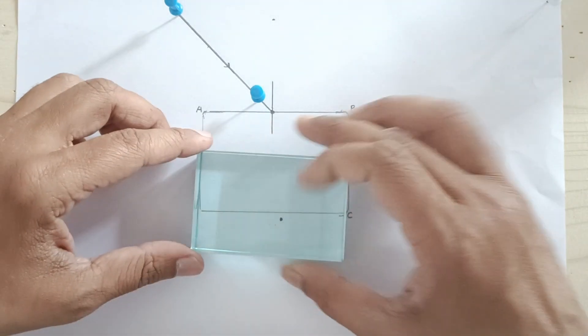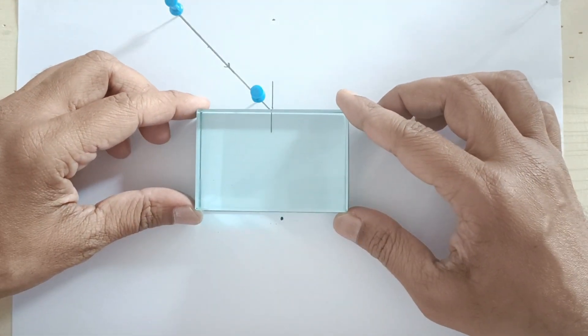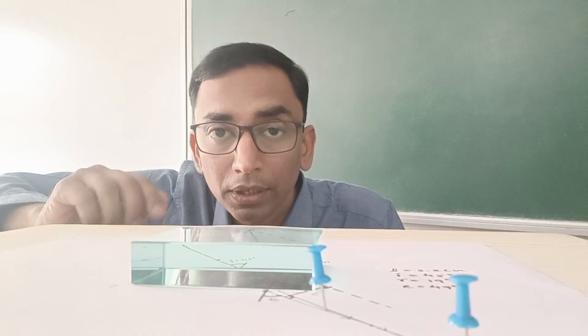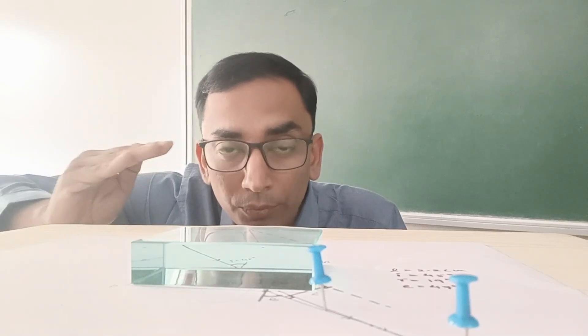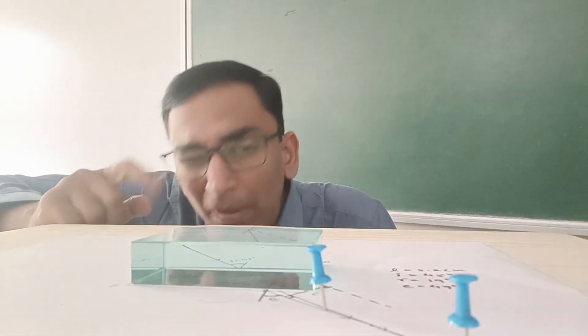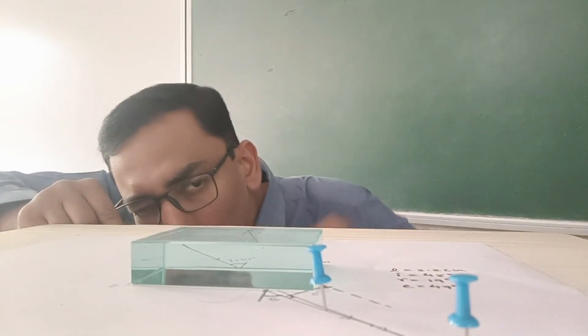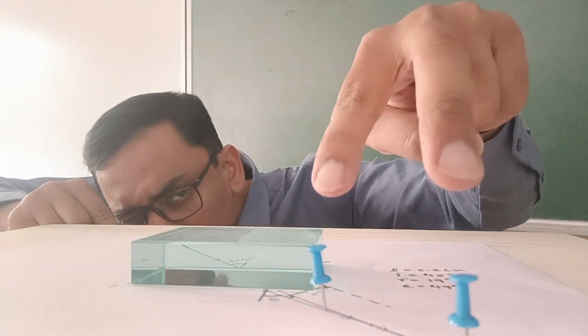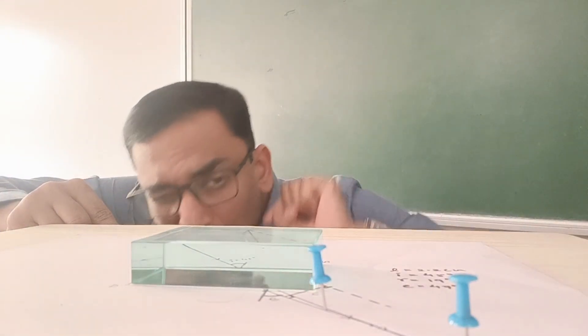Place the glass slab back at its marked place. You need to get down from where you are sitting. Your eyes must be parallel to the level of the glass slab. Then by closing one of your eyes, you have to observe these two pins from this side of the glass slab.